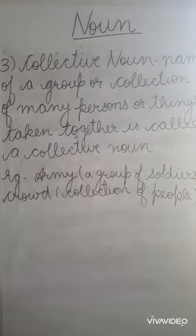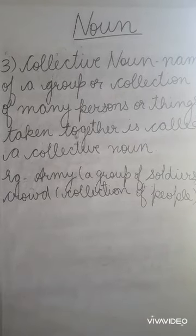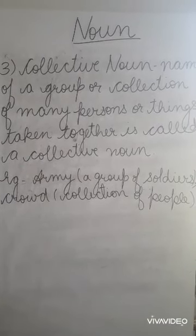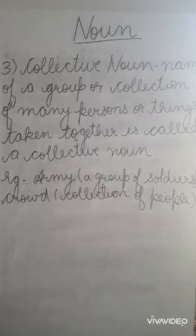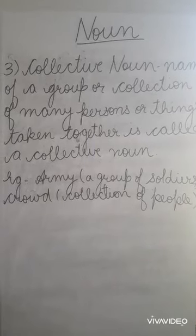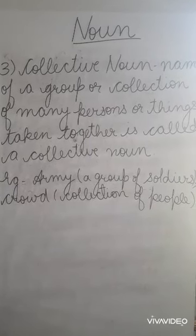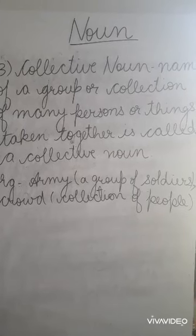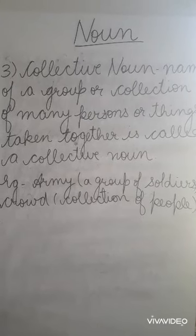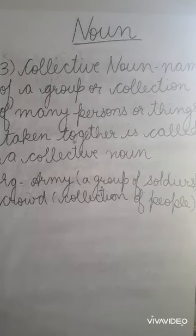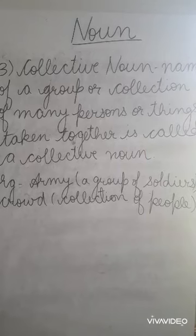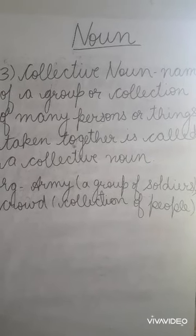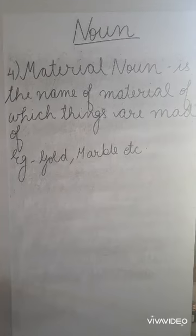The third type of noun is collective noun. The name of a group or collection of many persons or things taken together is called a collective noun. In this type of noun, we talk about a group or a collection of people or things. For example: army, which is a group of soldiers, and crowd, which is a collection of people.